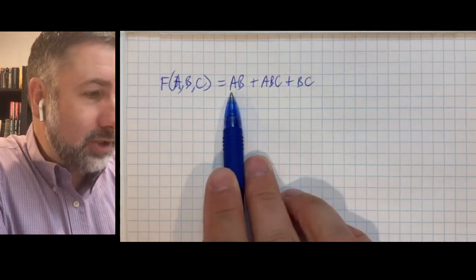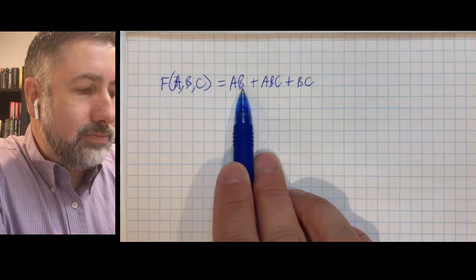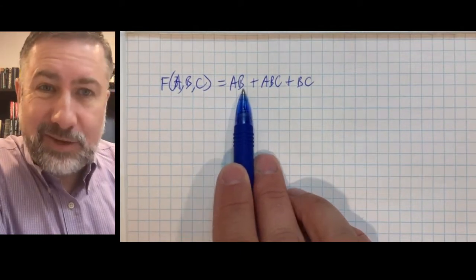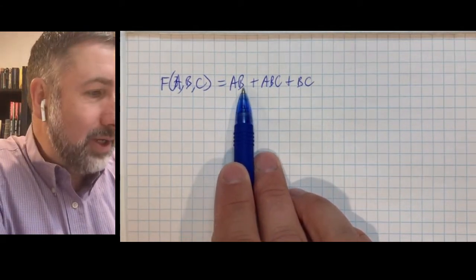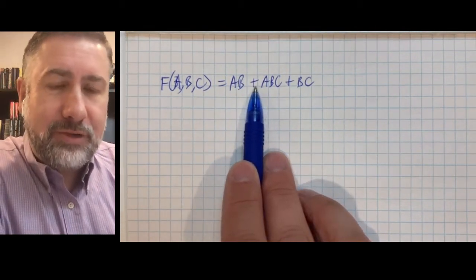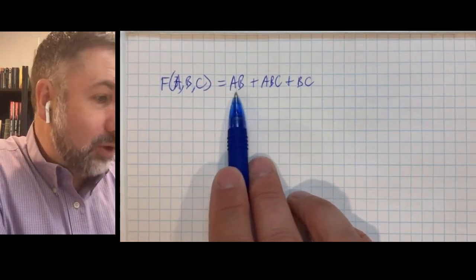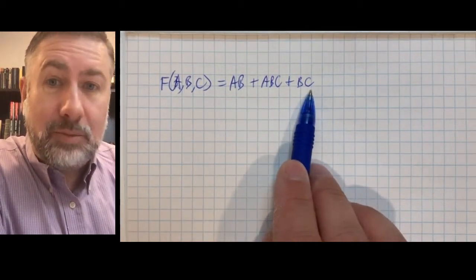We call these a product term because it's two literals anded together, or multiplied together. Remember, and and multiply are sort of the same, but not quite, or and addition are sort of the same and not quite. So we call these product terms, and we call this whole thing together a sum of products.